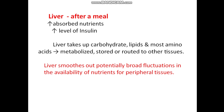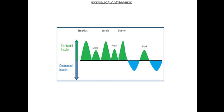After a meal, there are increased absorbed nutrients and increased insulin levels. The liver takes up carbohydrates, lipids, and most amino acids, which are metabolized, stored, or routed to other tissues. In this way, the liver smooths out potentially broad fluctuations in nutrient availability for peripheral tissues.